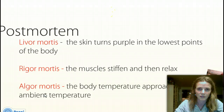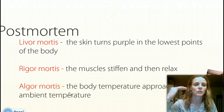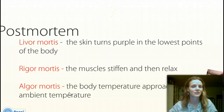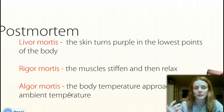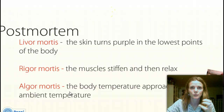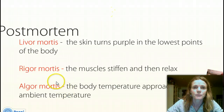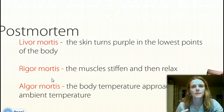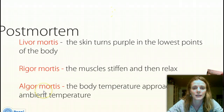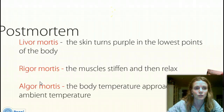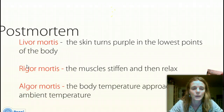The last post-mortem change is algor mortis — the body temperature approaches ambient temperature. Basically, the body's temperature will drop to match its surroundings. If someone died in a freezer, algor mortis would drop their body temperature down to whatever the surroundings is. Different factors affect how quickly this happens: humidity, whether the person is clothed or not. So that's a little bit about post-mortem — the first 48 hours.